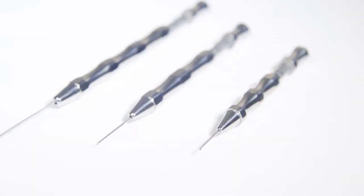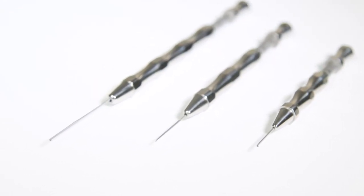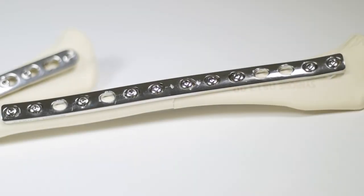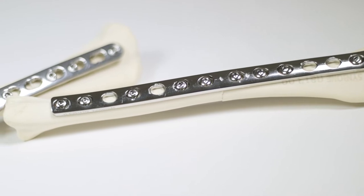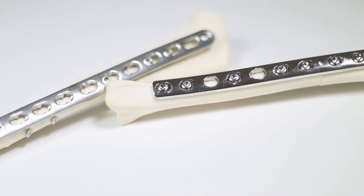A depth gauge is an essential device when performing any plating procedure, or other procedure involving placement of a screw. The surgeon must be able to accurately measure the depth of the pilot hole to choose the correct length of screw.